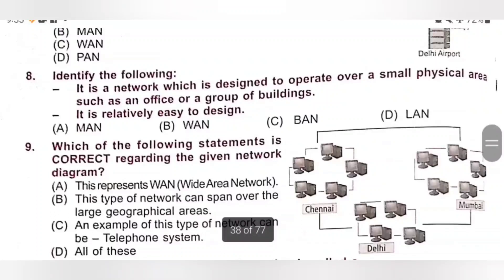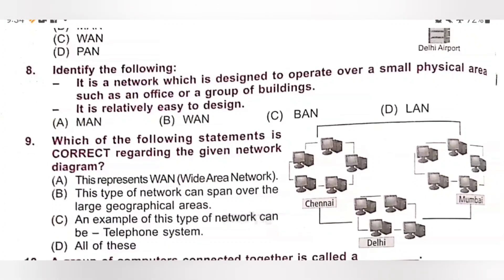Eight. Identify the following. It is a network which is designed to operate over a small physical area such as an office or a group of buildings. It is relatively easy to design. Options: A. MAN, B. BAN, C. BAN, D. LAN. LAN — local area network — is a network designed to operate over a small physical area such as an office or a group of buildings. Option D, LAN, is the correct answer.